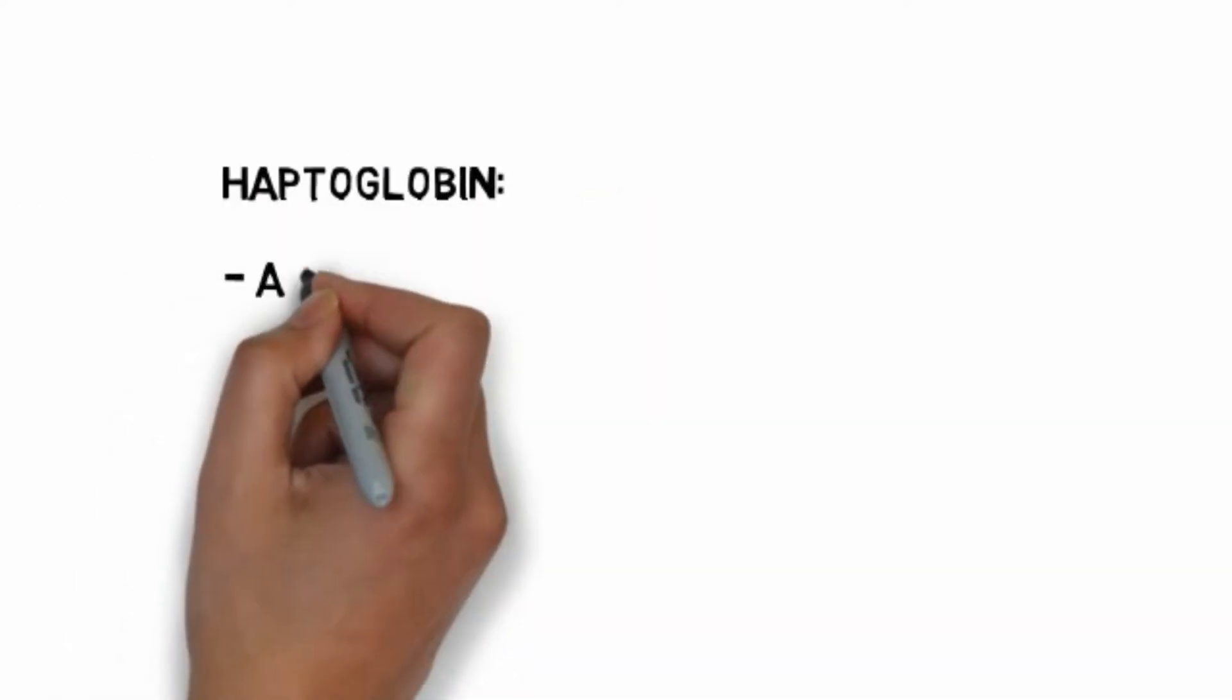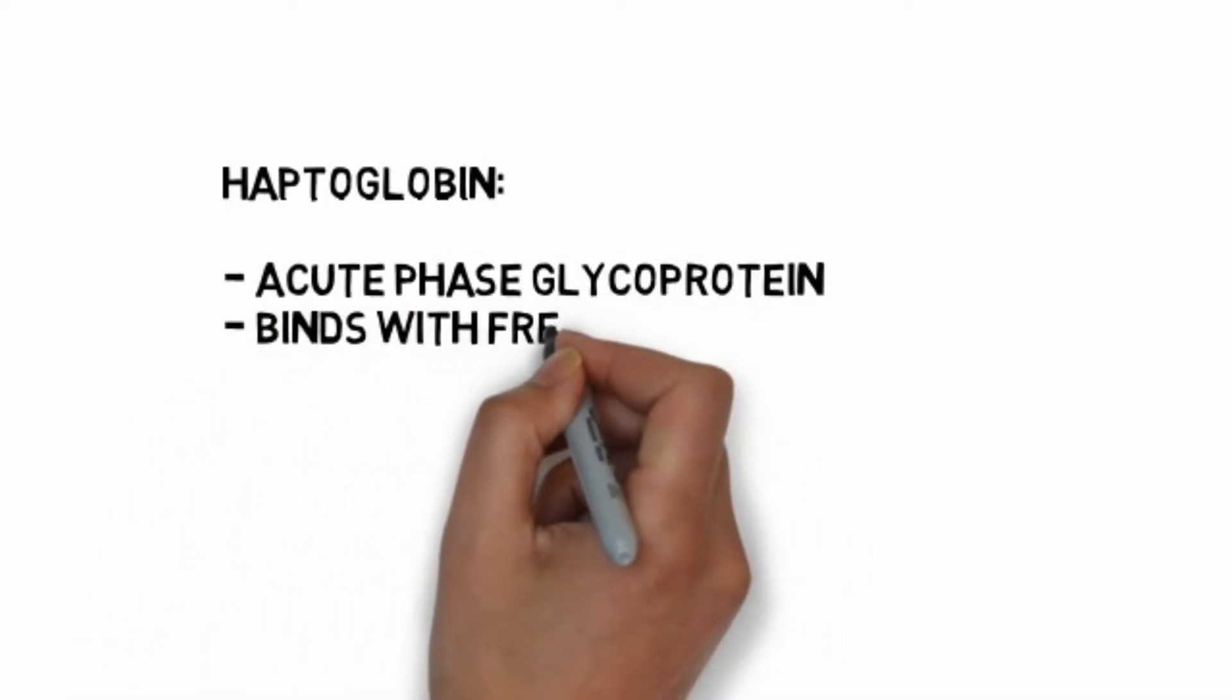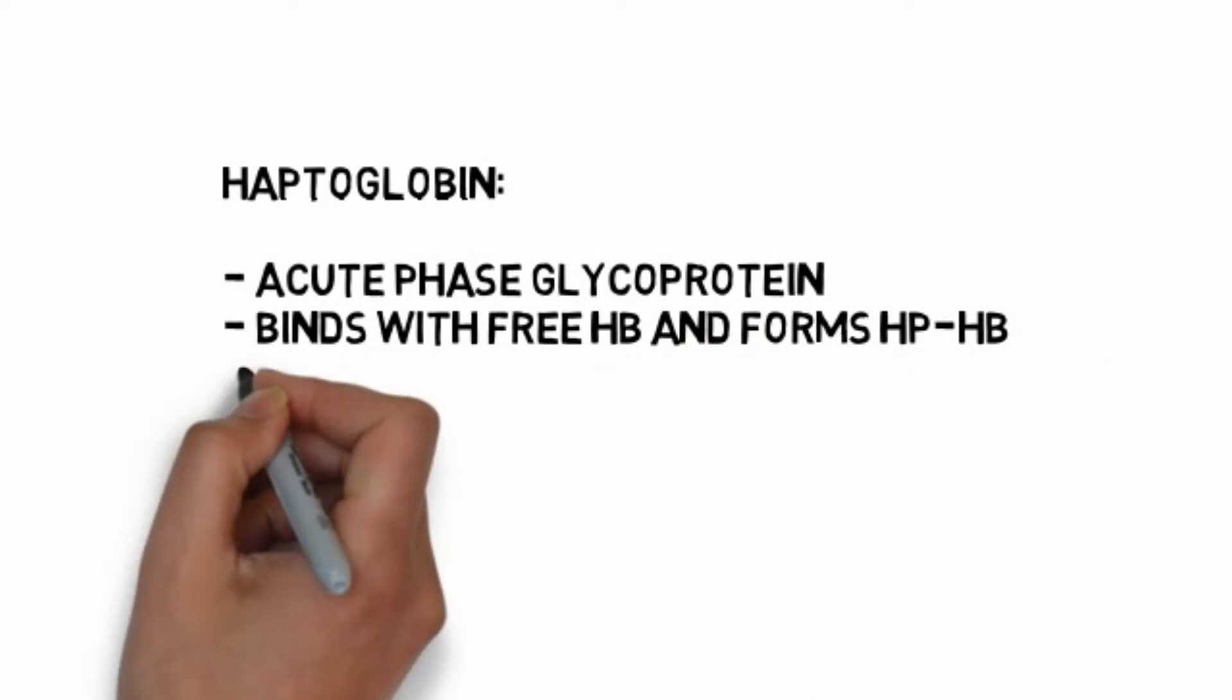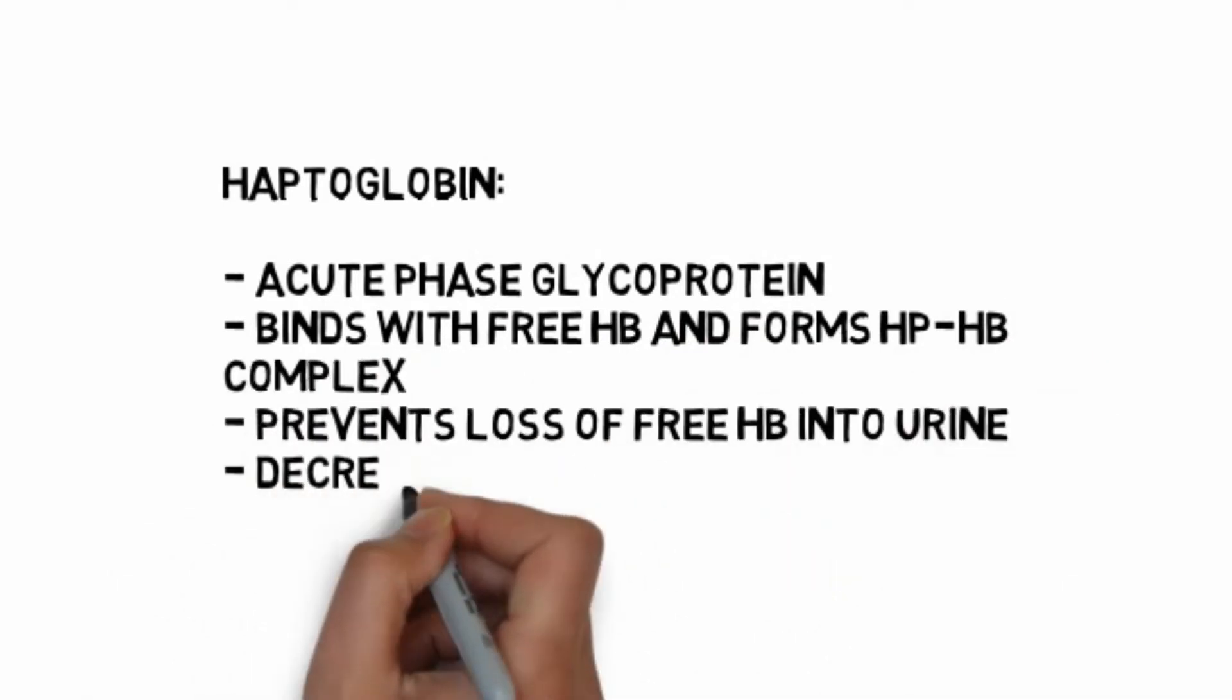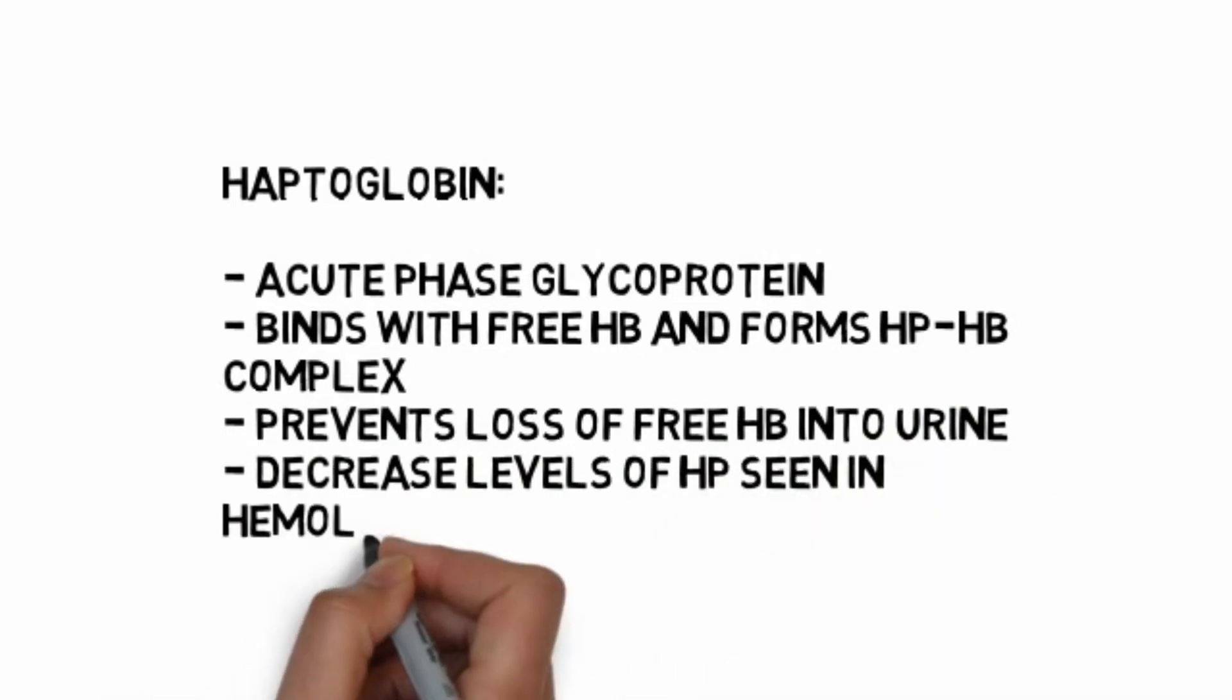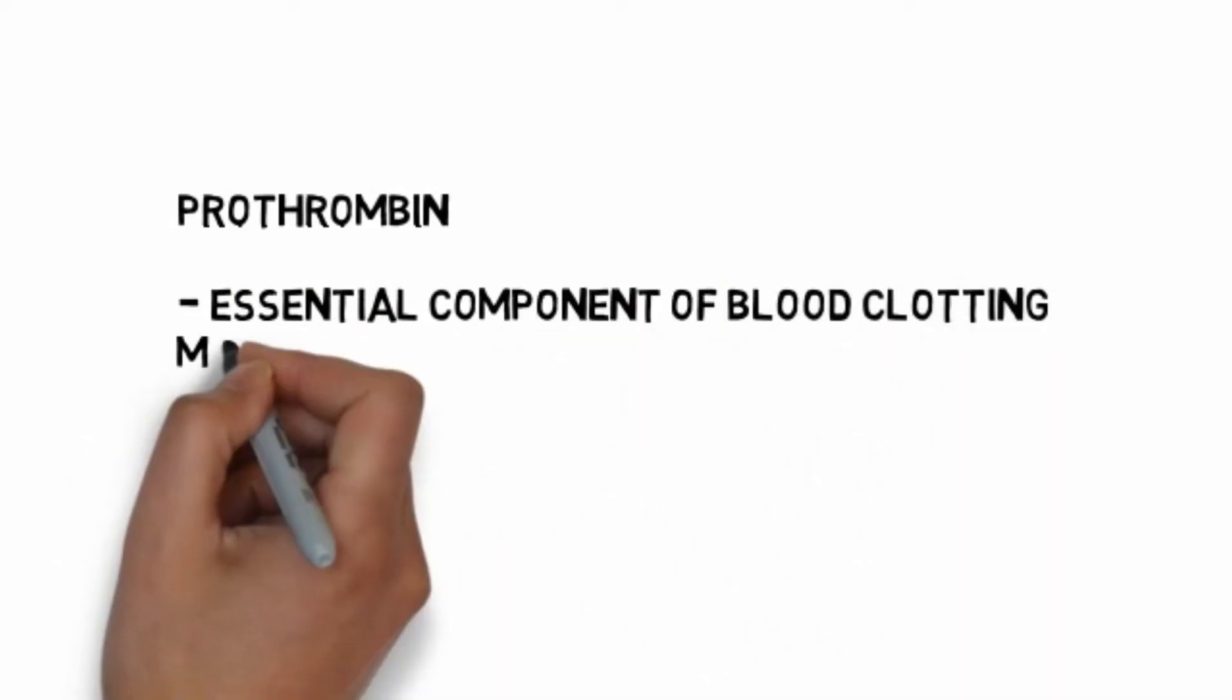Haptoglobin is an acute phase glycoprotein that binds with free hemoglobin and forms Hp-Hb complex, preventing loss of free hemoglobin into urine. Decreased levels of haptoglobin are seen in hemolytic anemia.